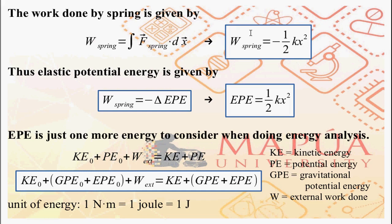And this work done gets stored in the form of elastic potential energy. Elastic potential energy, therefore, is just equal to one-half kx squared.